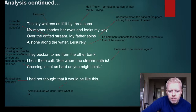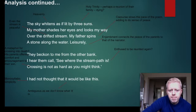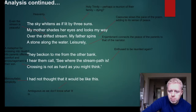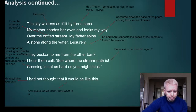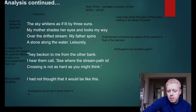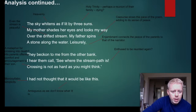There is caesura — punctuation in the middle of a line — 'over the drifted stream.' 'Drifted' creates a nice, peaceful stream, so the whole tone or mood is peaceful and calm and reassuring. There's no drama or trauma here. 'My father spins a stone along the water' — lots of caesura and enjoyment here — the caesura slows the pace of the poem, adding to its sense of peace. There's no rush, no panic. The enjoyment connects the peace of the parents to that of the narrator. Leisurely, they beckon to me from the other bank — they are enthused, as shown by the exclamation mark, to be reunited again, as is he perhaps.